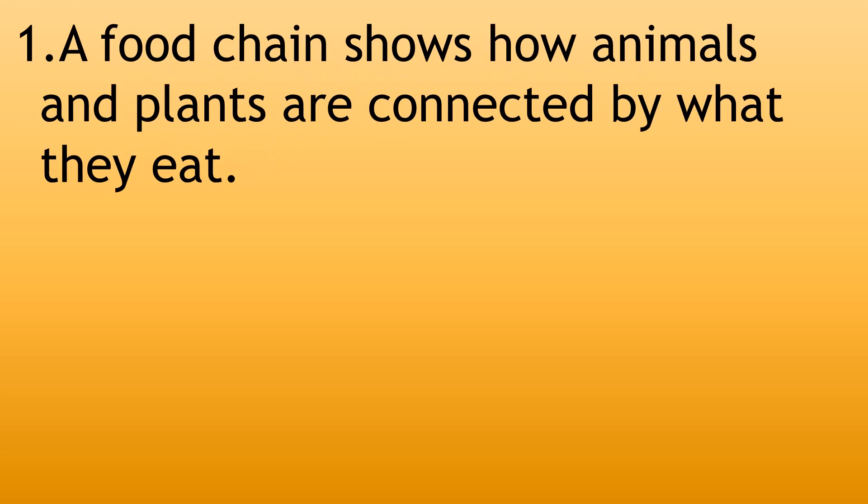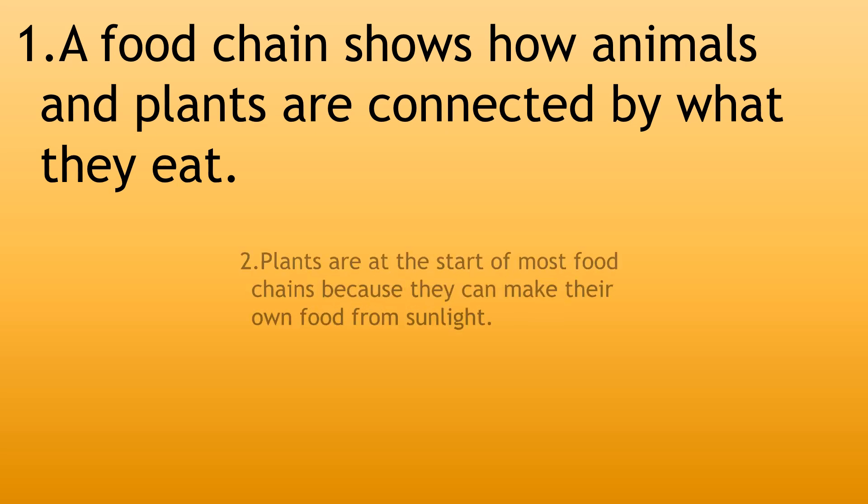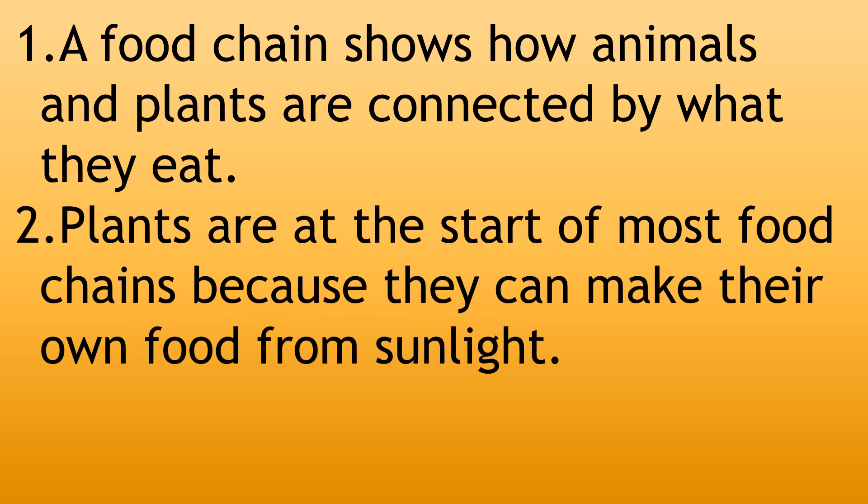A food chain shows how animals and plants are connected by what they eat. Plants are at the start of most food chains because they can make their own food from sunlight.